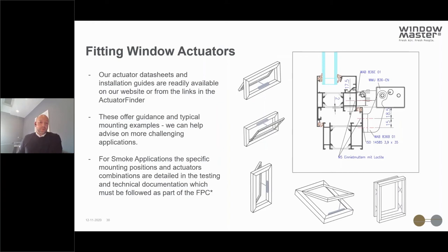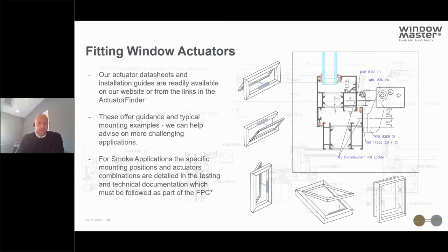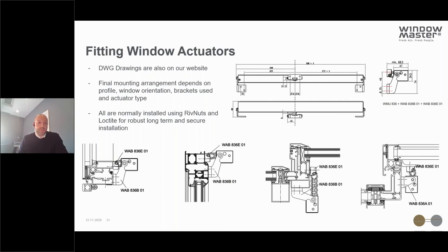Our data sheets and installation guides are a really good resource for working out actuator fitting, with links to these within the actuator finder output. They offer typical mounting examples for most window orientations and profiles, and our in-house team can help on specific applications. For smoke applications it's much more rigid — actuators need to follow tested arrangements and use components approved as part of the testing and technical documentation, which is followed as part of factory production control for smoke vents.